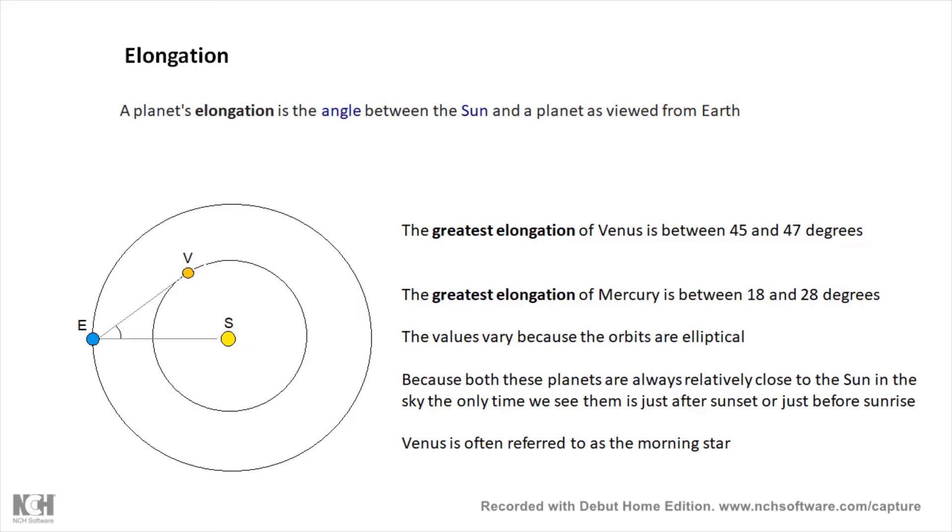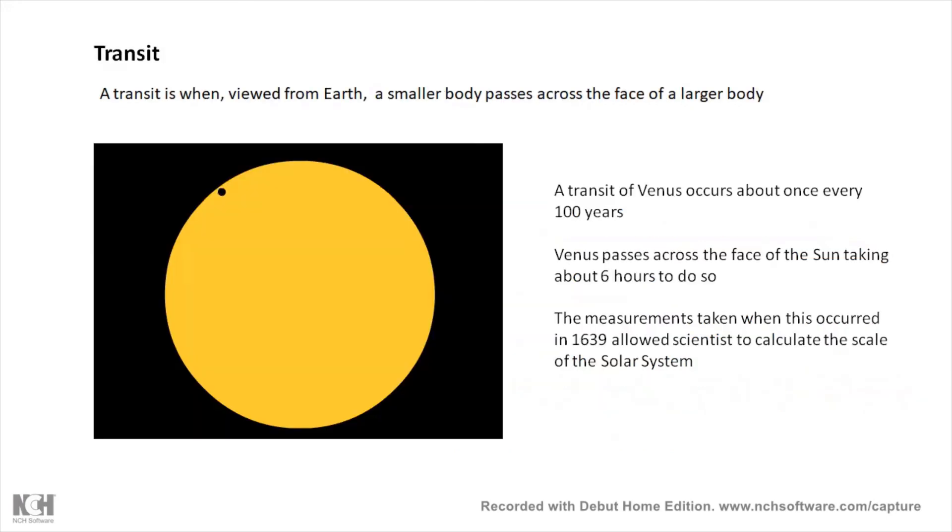And it varies because the orbits are elliptical. Interesting to note that because Venus and especially Mercury are relatively close to the Sun, then when do we see them? Well we will see them either just after sunset or just before sunrise. If you get up early in the morning and you see a very bright star somewhere to the east just before sunrise, it's probably not a star, it's probably Venus. Venus is often referred to as the morning star because it's big and bright, not high in the sky but big and bright in the sky just before sunrise very often.